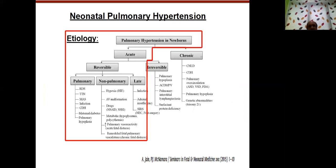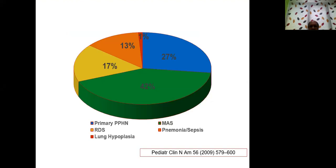Looking at the causes: 42% of pulmonary hypertension is because of meconium aspiration syndrome, 17% due to respiratory distress syndrome, primary PPHN contributes around 27%, infection as pneumonia and sepsis contributes 17%, and around 1-2% is due to problems with lung development. These numbers are from western literature — there will likely be differences in India, with meconium aspiration and infection as primary causes along with RDS.